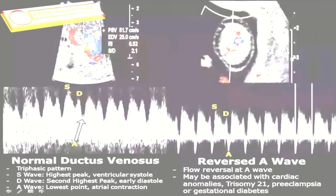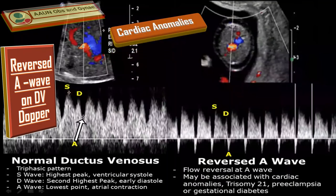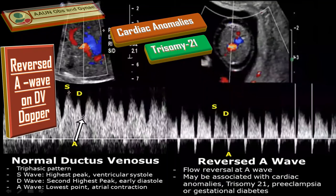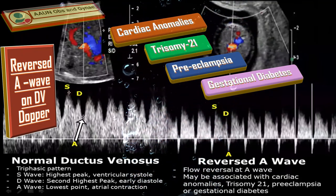Here is another example of a reversed A wave on Doppler ultrasound. The A wave is below the baseline, indicating flow reversal. This finding may be associated with certain conditions like cardiac abnormalities, trisomy 21 (also called Down syndrome), preeclampsia, and gestational diabetes. That was all about the ductus venosus Doppler — thank you so much.